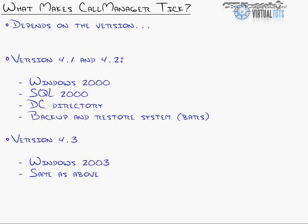Those are always being upgraded. The software, however, doesn't really change unless you move between major Call Manager versions. As I mentioned, we're talking about Call Manager 4.x in this series, and in version 4.1 and 4.2 of Call Manager, along with version 3.3, you are running Windows 2000 Server.